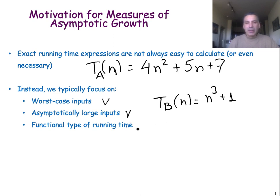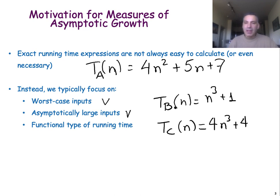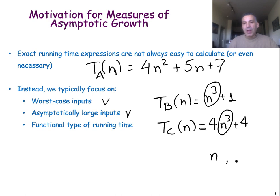The third focus is on the functional type of the running time rather than the specific expression. For instance, if I give you a third algorithm c in which the running time is 4n cubed plus 4, you would say that algorithm c is four times slower than algorithm b, and that's correct. But does it really matter? In both algorithms, the running time increases with the cube of the size n. This is very different from an algorithm where the running time increases as n — a linear time algorithm — or a running time that increases as 4 to the nth power. Typically we care only about the type of the functional growth rather than the exact expression of the running time.